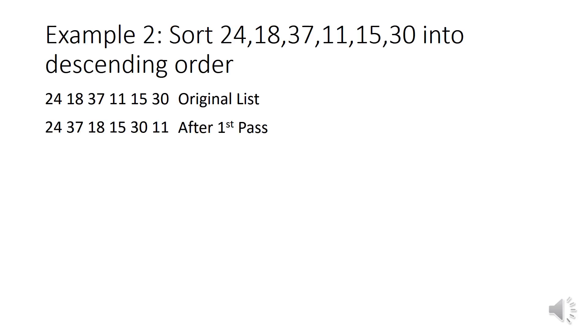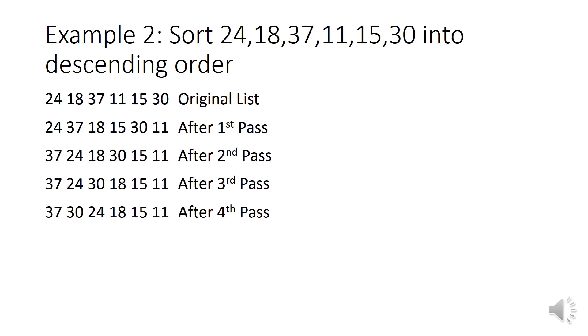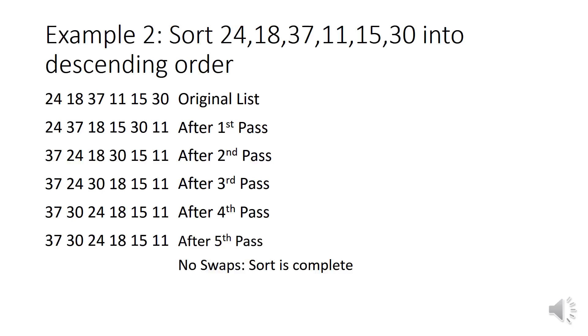Now we're going to do another example. Sort 24, 18, 37, 11, 15 and 30 into descending order. We're going to be doing the same thing again but this time items are sorted if they're descending, not ascending. We'll write out our original list, go through, check each pair and swap them, giving us our list after the first pass. We'll do this again until we get it sorted. By the fourth pass the list has been completely sorted, but now we need to do one final pass to show that it's sorted, as there are no swaps. After the fifth pass there are no swaps and the sort is complete.